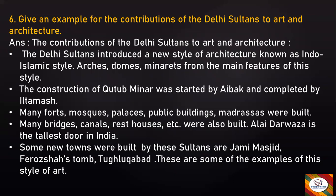Many forts, mosques, palaces, public buildings, and madrasas were built. Many bridges, canals, and rest houses were also constructed. Alai Darwaza is the tallest door in India. Some new towns were also built by these sultans. They built the Jami Masjid, Firoz Shah's structures, and Tughlaqabad — these are some examples of this style of art.